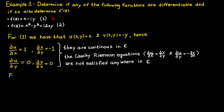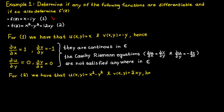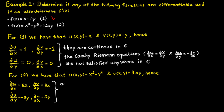If we use the same procedure for the second function, we get that u is equal to x squared minus y squared, and v is equal to 2xy, which means our partial derivatives will become the following. Since they are polynomials, they will be continuous in the whole complex plane.